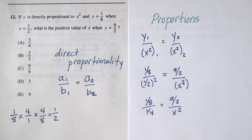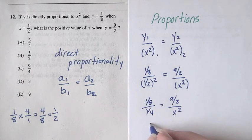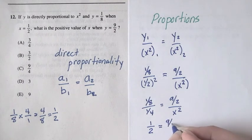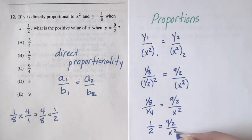That means we can replace this with one-half, which looks a lot nicer. So this is one-half equals nine-halves over x squared.